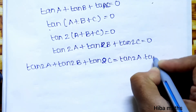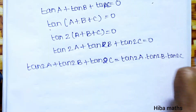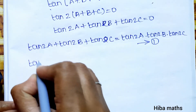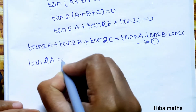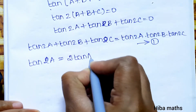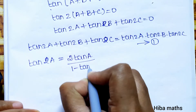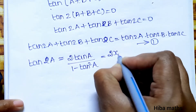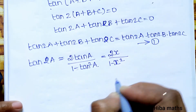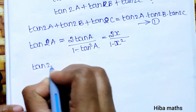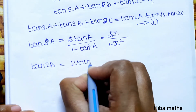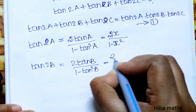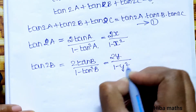We have tan 2A times tan 2B times tan 2C. Now, tan 2A equals 2 tan A divided by (1 minus tan squared A). Since x equals tan A, this becomes 2x divided by (1 minus x square). Similarly, tan 2B equals 2 tan B divided by (1 minus tan squared B), which is 2y divided by (1 minus y square).